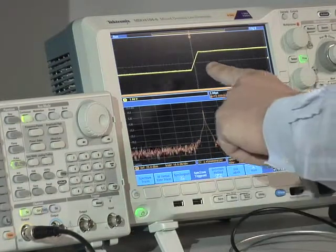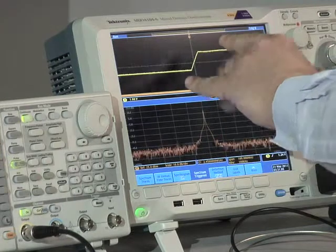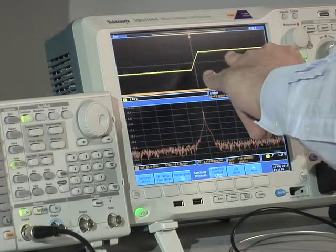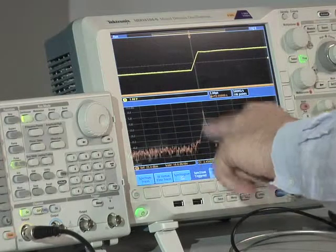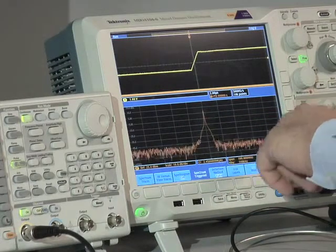So that fairly clearly illustrates the consequences of changing the rise time. Obviously the PA turns on more slowly, but at the same time your spectral purity, your transient spectral purity improves dramatically.